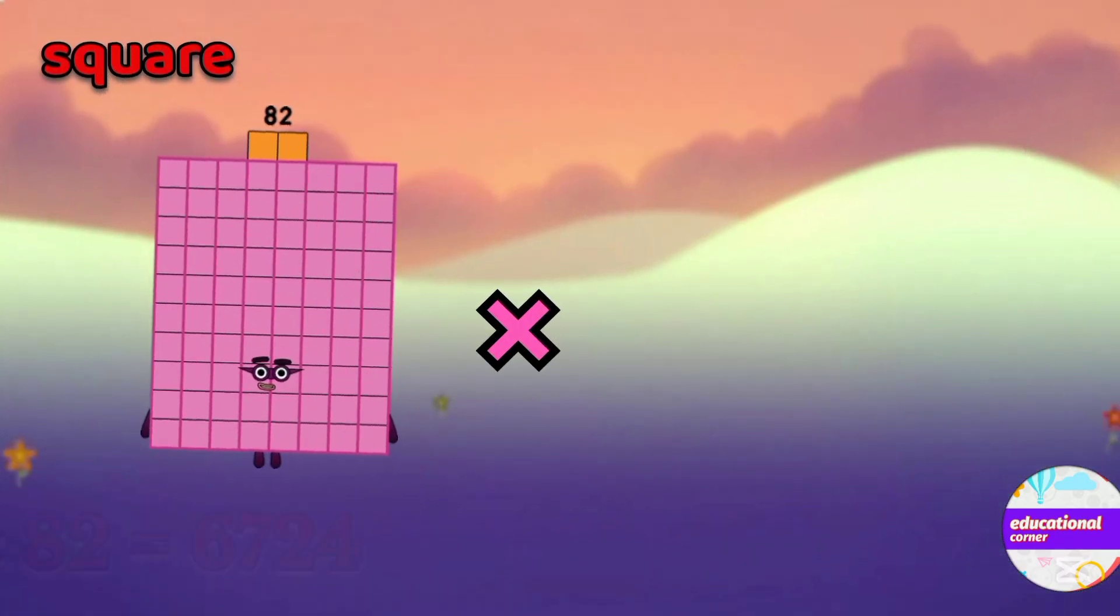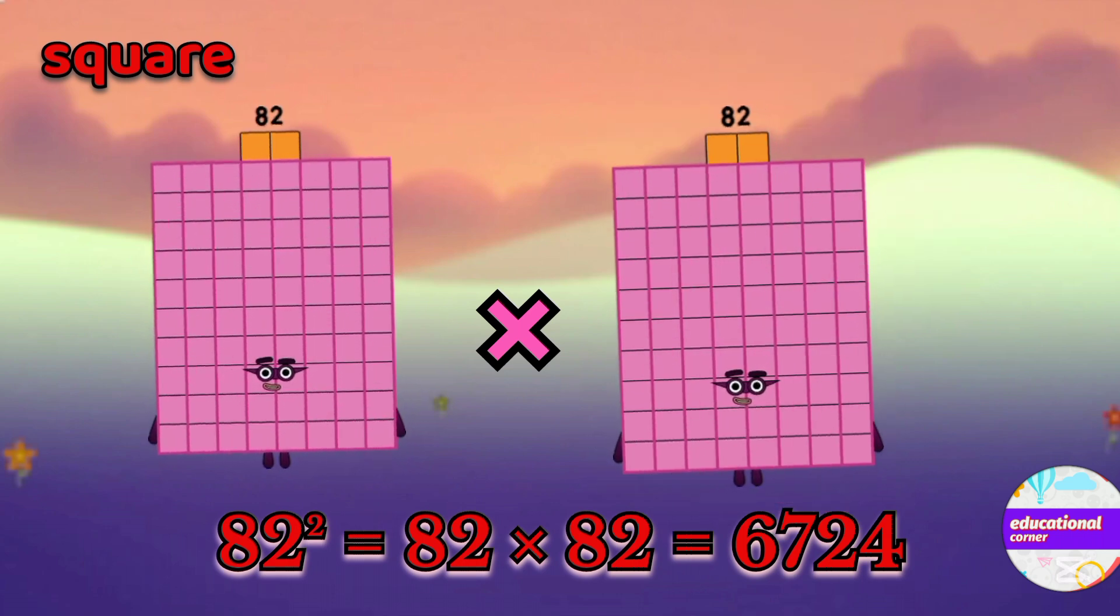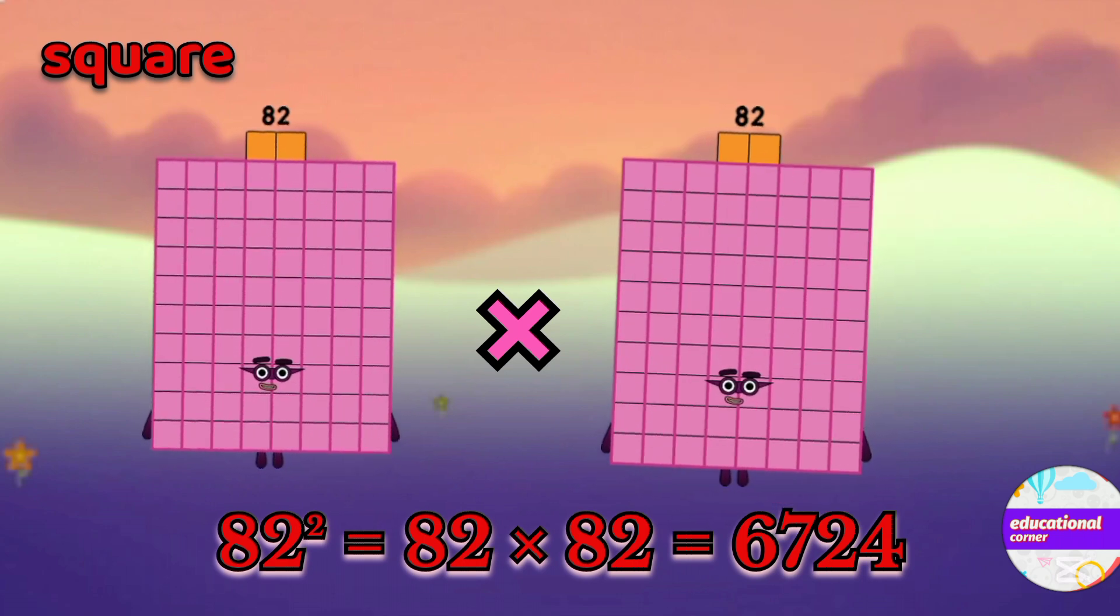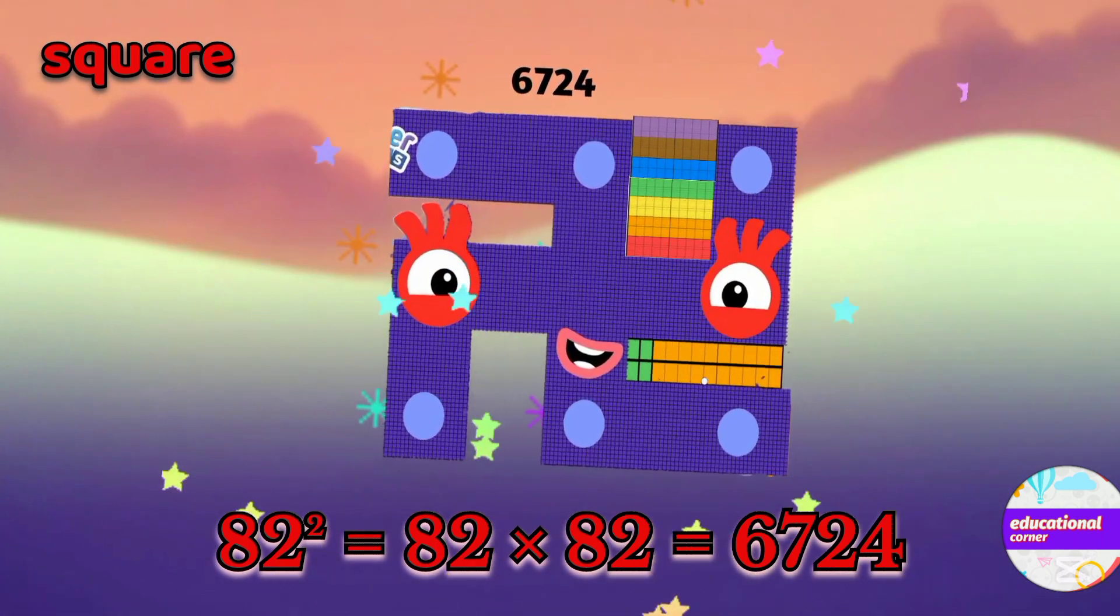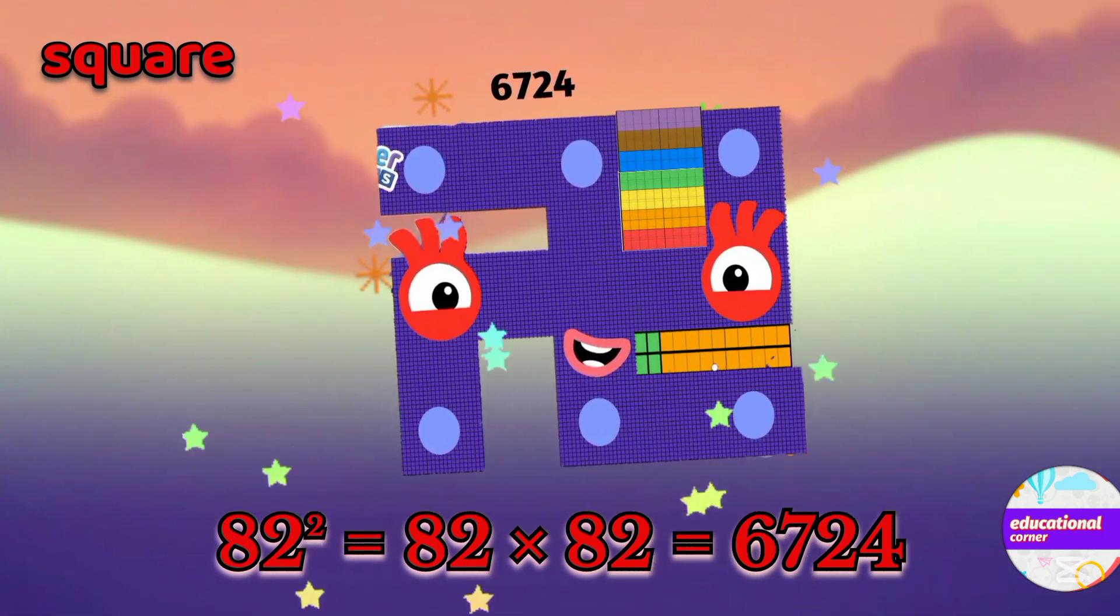If we multiply 82 by 82, the square of 82 is 6724.